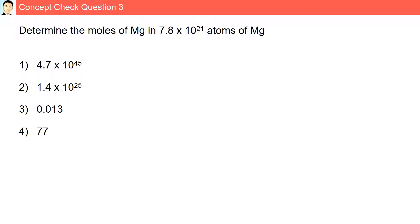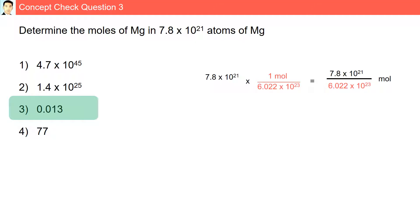Question 3. Determine the moles of magnesium (Mg) in 7.8×10²¹ atoms of Mg. Here we need to find how many moles are present in that amount of atoms. Using the second conversion factor, we have 7.8×10²¹ atoms of Mg divided by 6.022×10²³, which gives 0.013 moles of Mg.